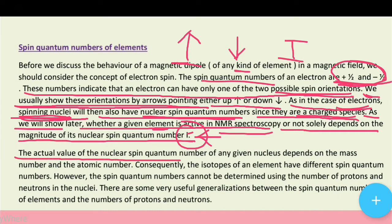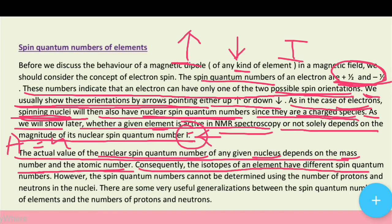The actual value of the nuclear spin quantum number of any given nucleus depends on the mass number A (number of protons plus neutrons) and the atomic number Z (number of protons). Consequently, the isotopes of an element have different spin quantum numbers because their mass numbers differ. Alag-alag isotopes ka alag-alag spin quantum number hoga kyunki unka mass number alag hota hai.